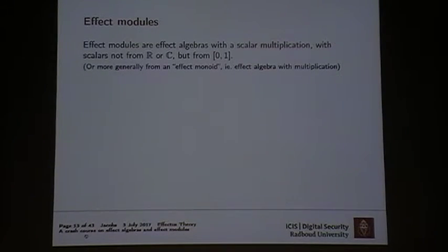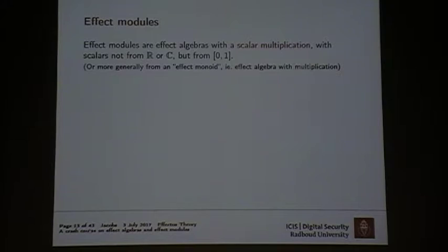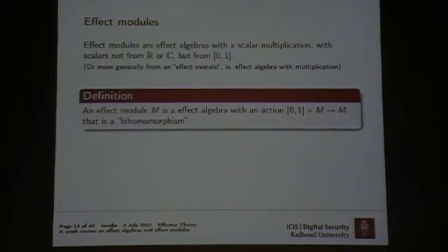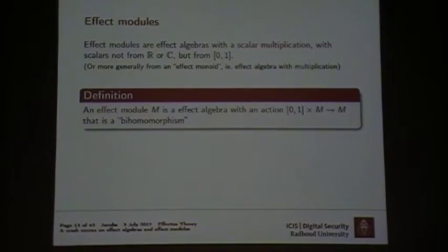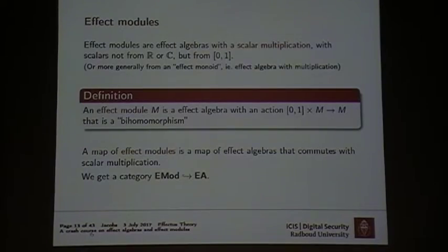Effect modules are effect algebras on which you have an additional scalar multiplication, but you take scalars not from the reals or complex numbers but from the unit interval [0,1]. Some people call these convex effect algebras, but the name module is more natural — you can think of them as probabilistic vector spaces. An effect module is an algebra with a scalar multiplication which is a suitable bi-homomorphism, preserving the plus in both coordinates and preserving 1. A map of effect modules is a map of effect algebras that also preserves scalar multiplication.